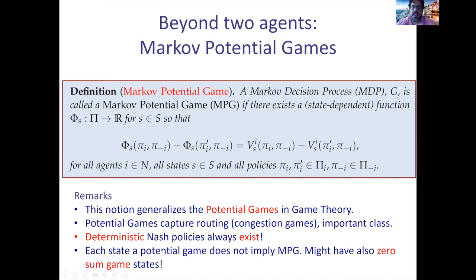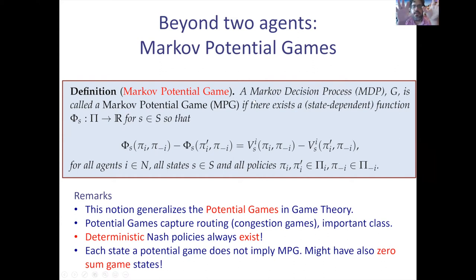Here are some examples about Markov potential games. It's a somewhat weird setting — you might have a stochastic game where every state is a potential game but the aggregate stochastic game is not a Markov potential game. In game theory, a potential game has a potential function such that if a player changes his strategy, the change in utility is captured by the difference in the potential. What's even more interesting: I can give you a stochastic game where some states are zero-sum but the total game is a Markov potential game.